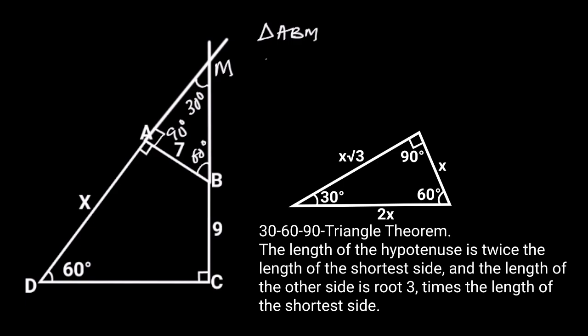The length of the hypotenuse is twice the length of the shortest side, and the length of the other side is root 3 times the length of the shortest side. Note that the shortest side is the side opposite 30 degrees. Now, in triangle ABM, 7 is the shortest side.